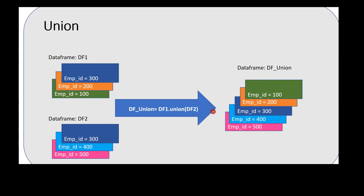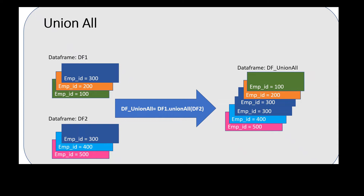In this example, I have given the output for Spark version below 2.0.0, which removes all the duplicates. All records from data frame one are added to the resultant data frame. Employee ID 300 from df2 is already present, so it is eliminated — only 400 and 500 are added. For union all, it retains the duplicate as well, so employee ID 300 appears twice. This is the only difference until Spark version 2.0.0.